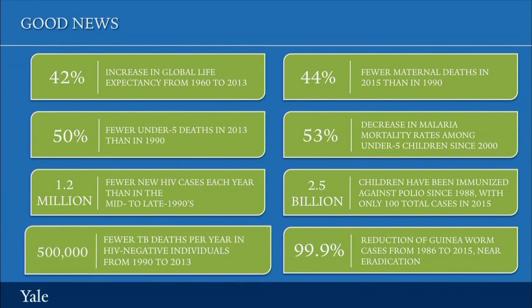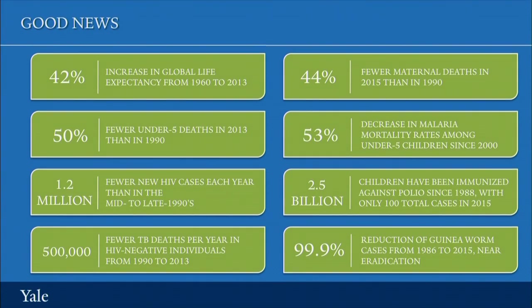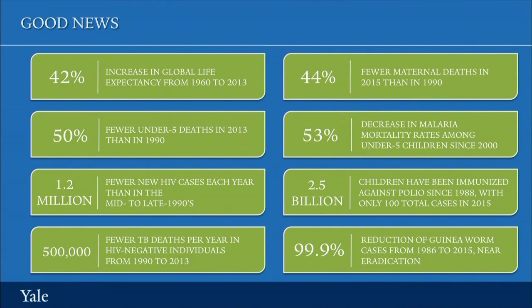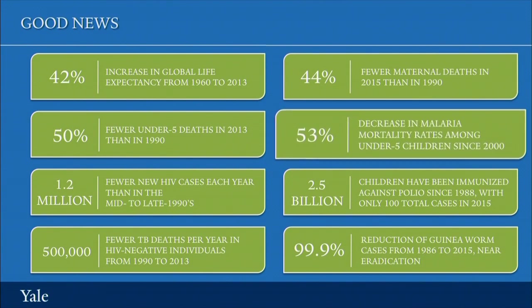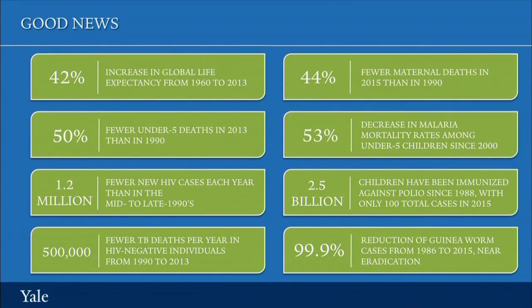There are 500,000 fewer TB deaths per year in HIV-negative individuals than there were in 1990. Maternal deaths have been cut since 1990 by almost half. There's been a greater than 50% decrease in malaria mortality rates among under-5 children since the year 2000.